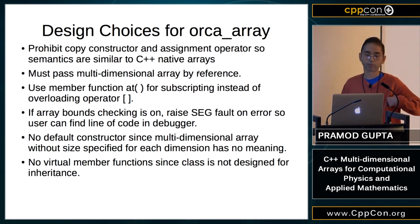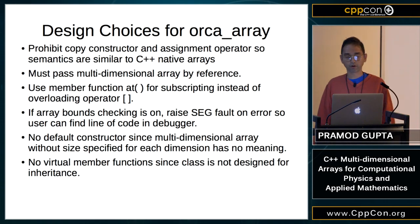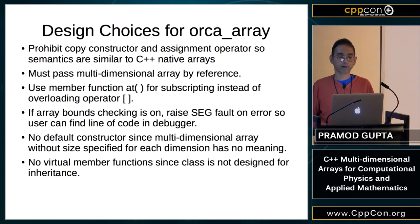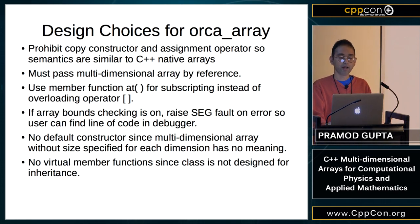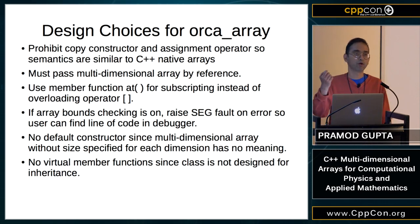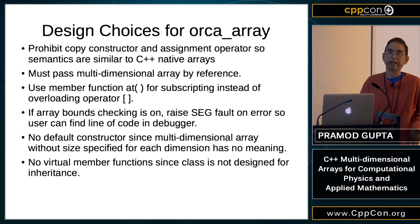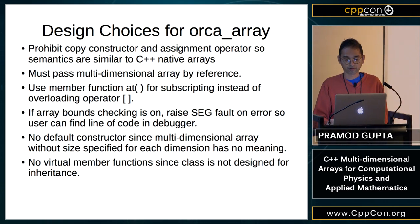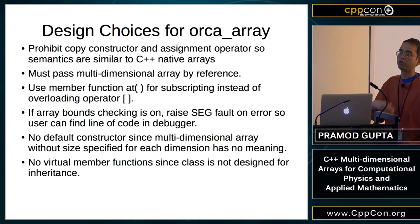I chose to prohibit the copy constructor and assignment operator so the semantics are similar to C++ native arrays. This removes the problem of people passing a thousand-by-thousand or million-by-million array and complaining it's slow — you must pass multi-dimensional arrays by reference. There's a member function 'at' for subscripting instead of overloading the subscript operator. If array bounds checking is on, you get a segmentation fault on error, making it easy to find the problematic line in a debugger.